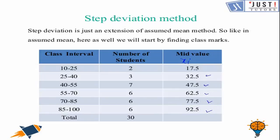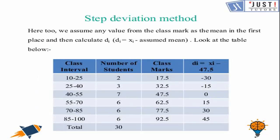After securing the xi's, the next step is to find the di. Remember that di can be found out with the help of an assumed mean. So again we are taking 47.5 as an assumed mean. Remember always assumed mean is chosen from the xi column. And you can choose any of the values from this column. For now for this question we have chosen 47.5.